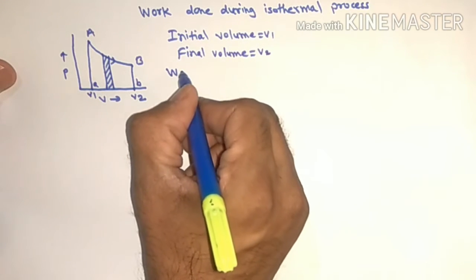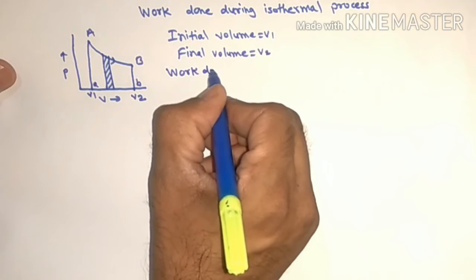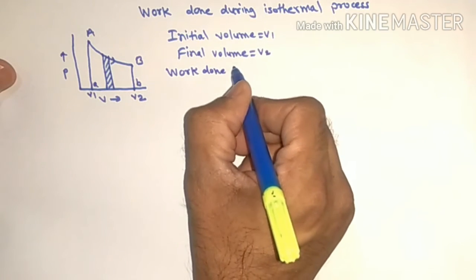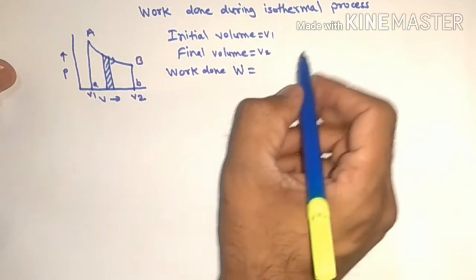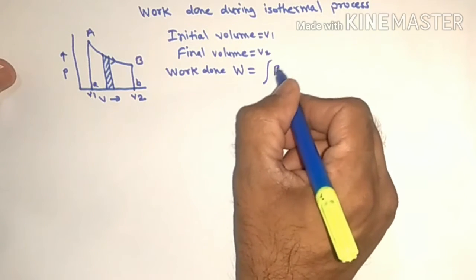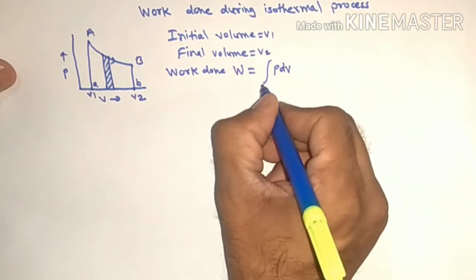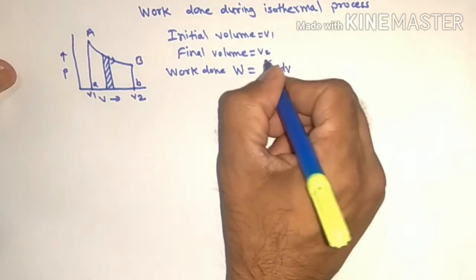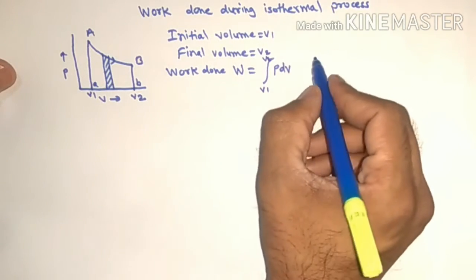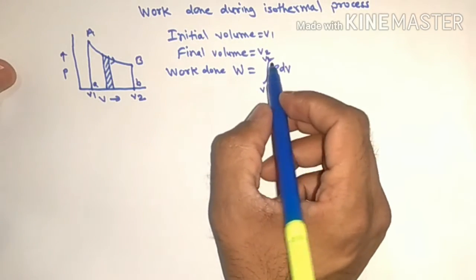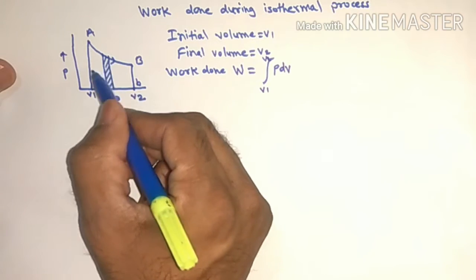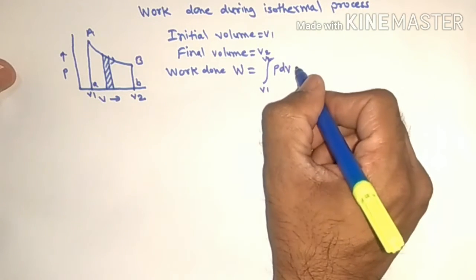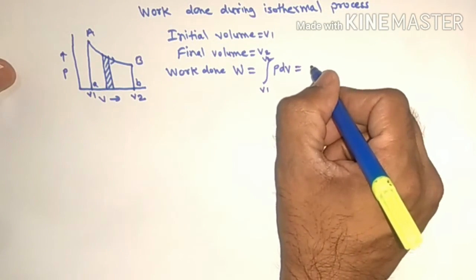Now work done during this isothermal process is given by W equals integration of PdV between limits V1 to V2. This is nothing but area under this curve AB, so we can write area ABBA.